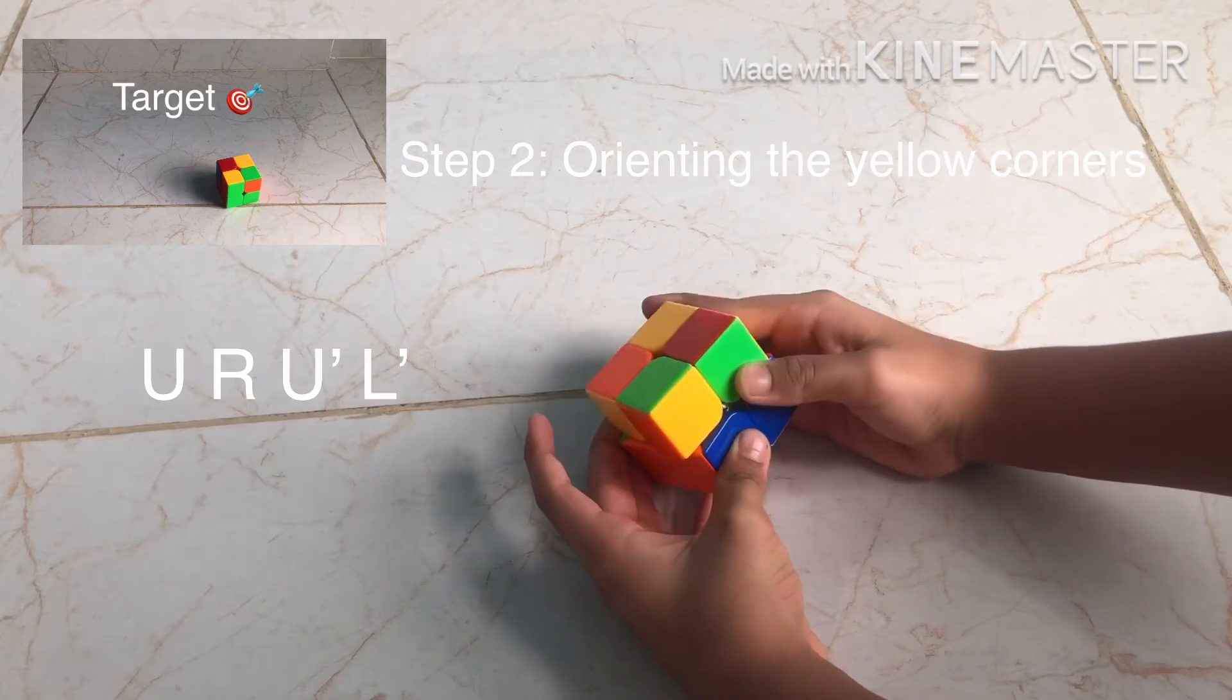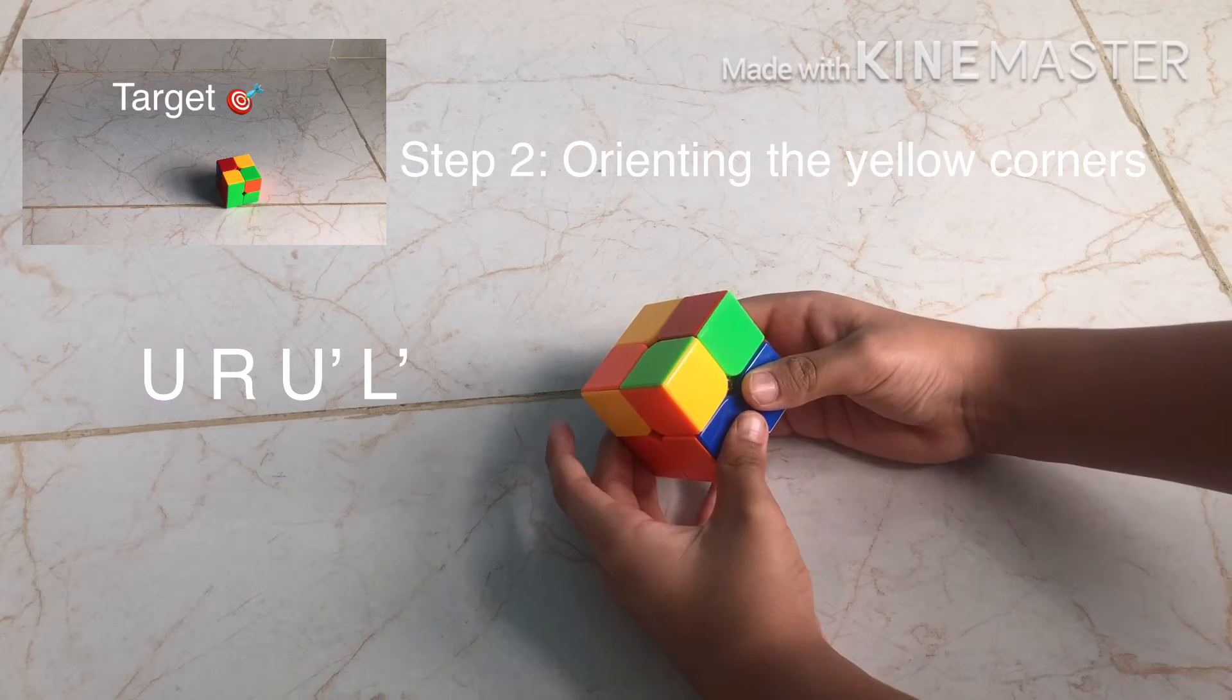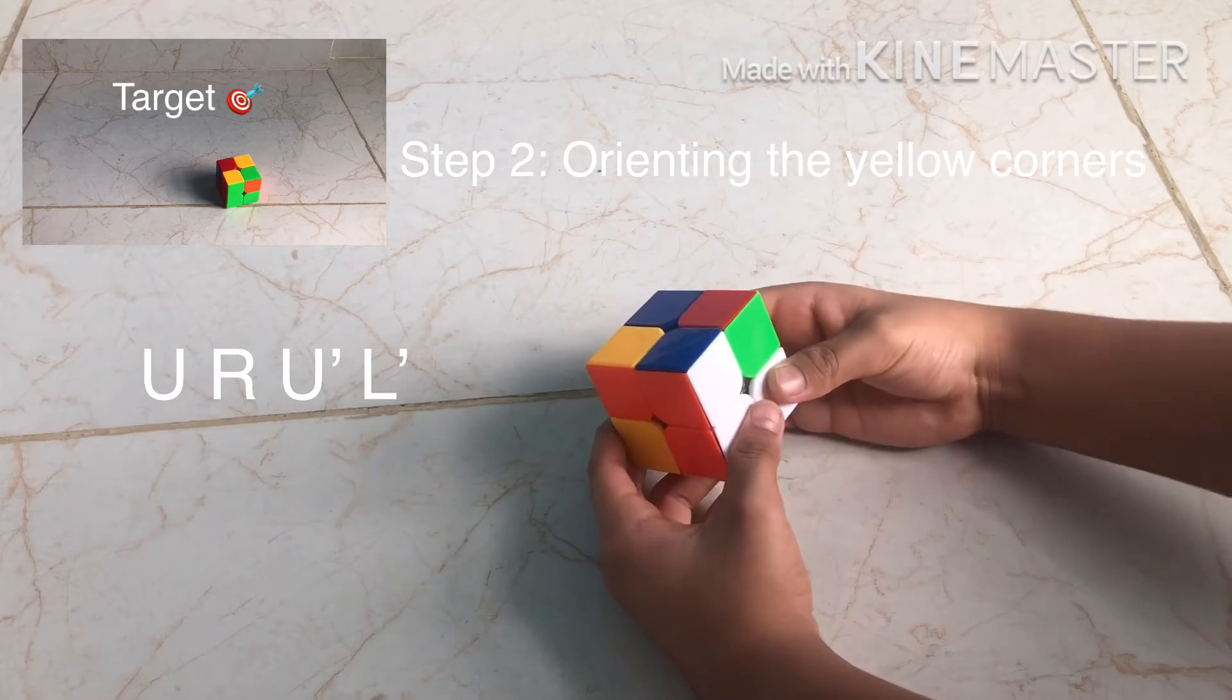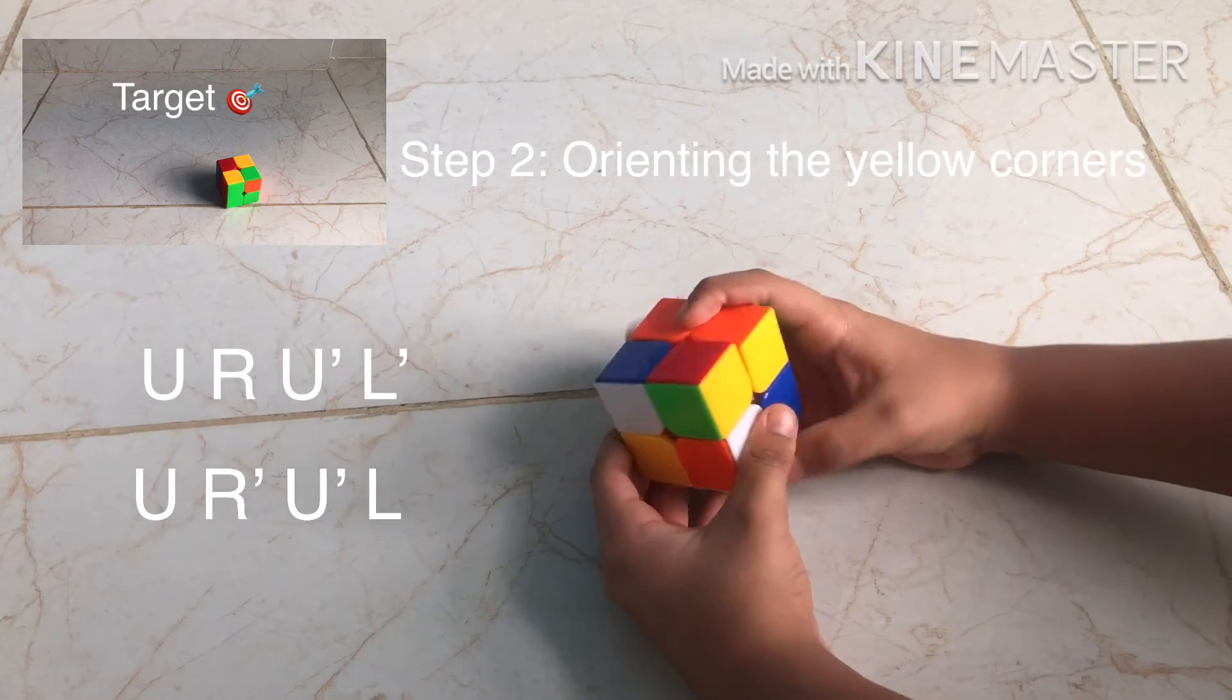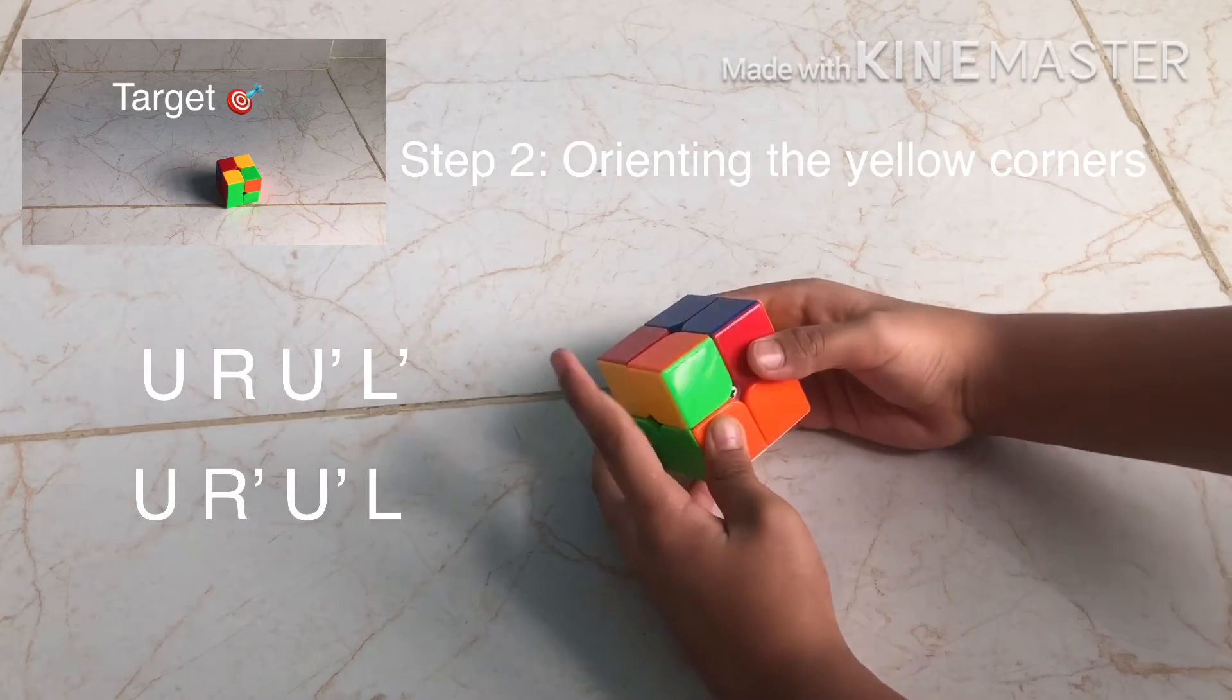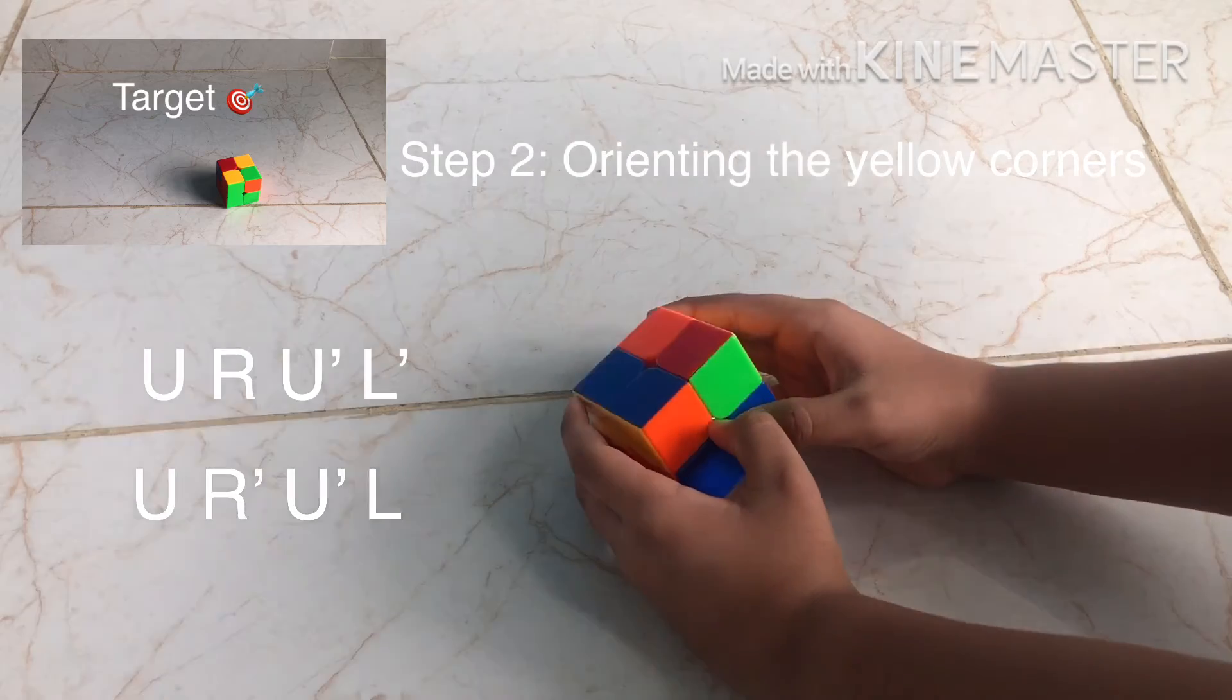U, but wait, use this algorithm only when you think that a corner is misplaced. Use this. U, R, U apostrophe, L. And, U, R apostrophe, U apostrophe, L. And keep doing this algorithm until you get the corners placed in that way.